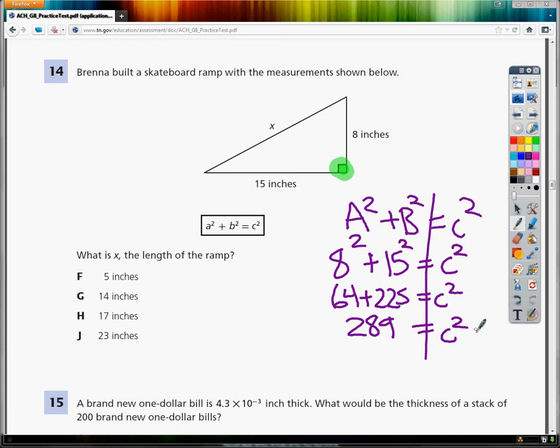And the reason that I'm doing it, by the way, is because 289 would be the number of blocks that would be inside a square that has one side the length of X. So if I made a square here...